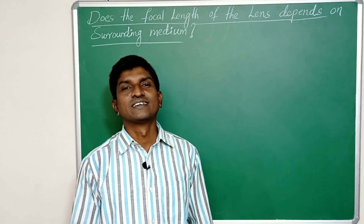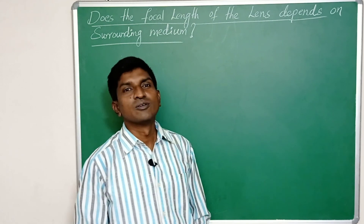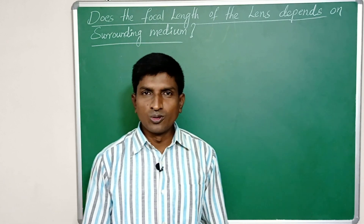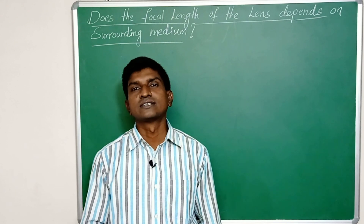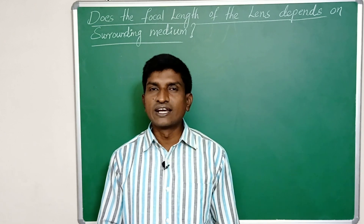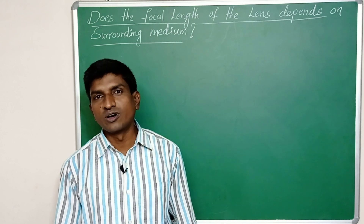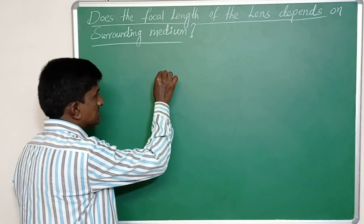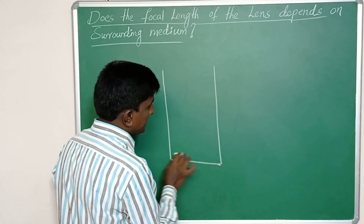Welcome everybody. We will discuss: does the focal length of the lens depend on the surrounding medium? To know this, we need a convex lens, a lens holder, a black stone, a cylindrical vessel which has greater height than the focal length of the lens, and water.